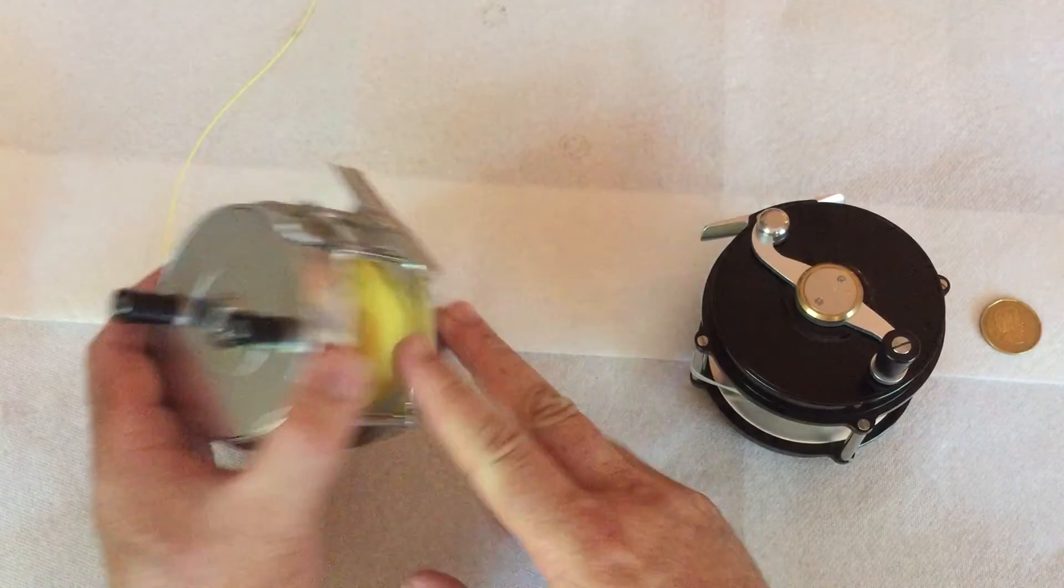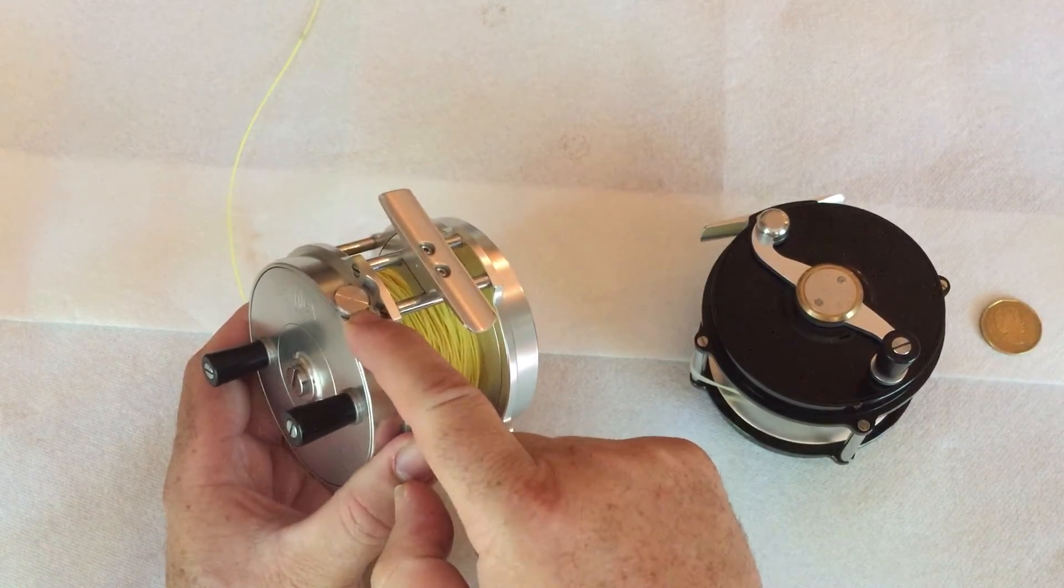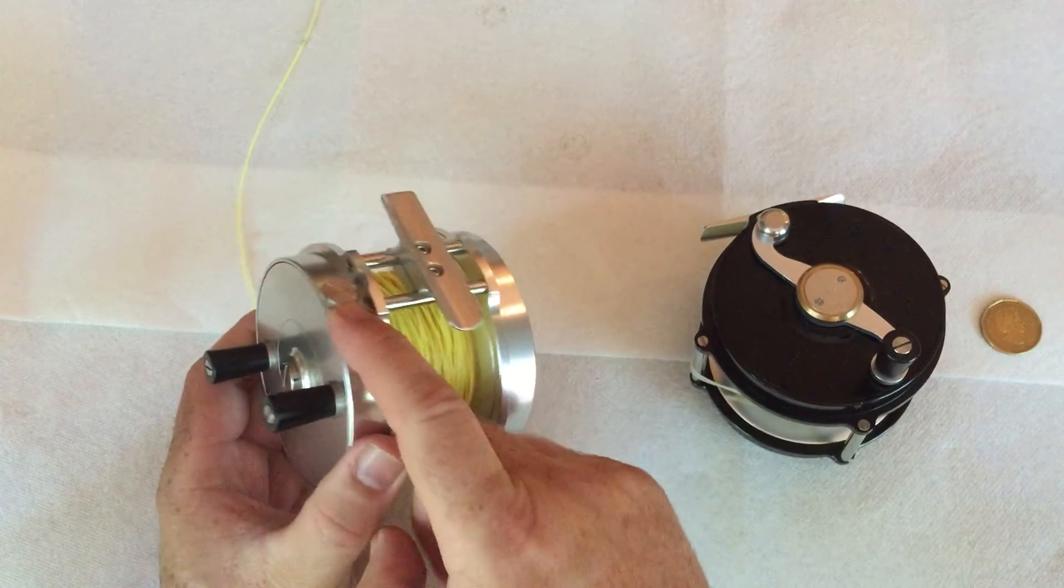The way to tell which side to lubricate on is fairly easy. It's whatever side has the thumb screw on. The off side does not need to be lubricated.